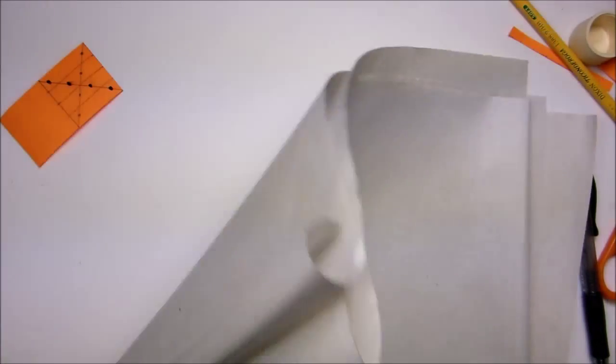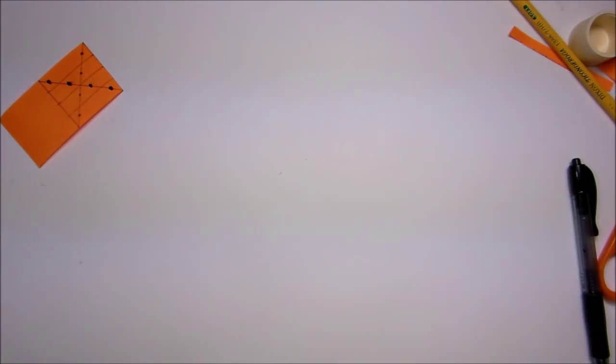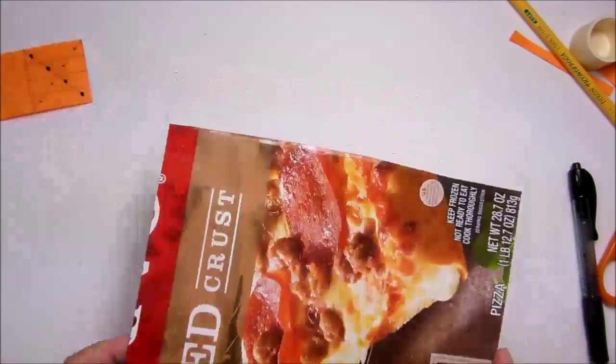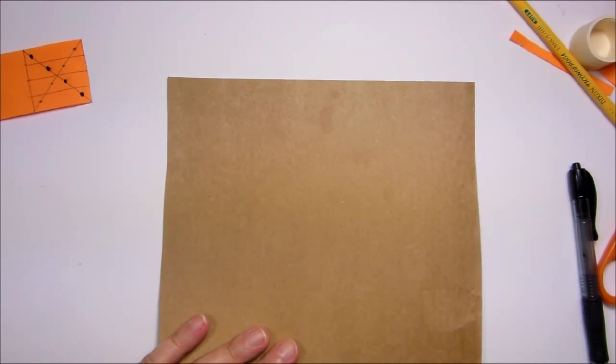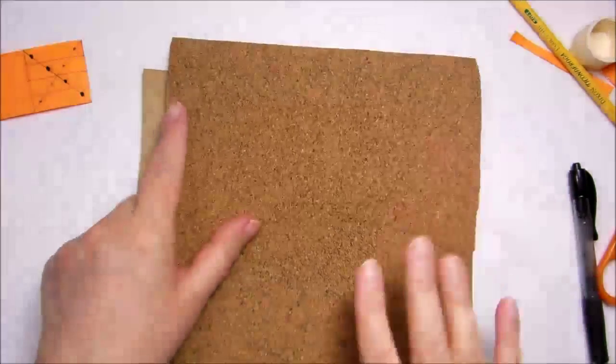The next thing you're going to do is prepare your base. The way I do that is you're going to need a piece of cardboard, cereal box cardboard. This one's from Pizza Box, the store-bought self-rising crust pizza. And you're going to need some cork. I use the sheet cork.